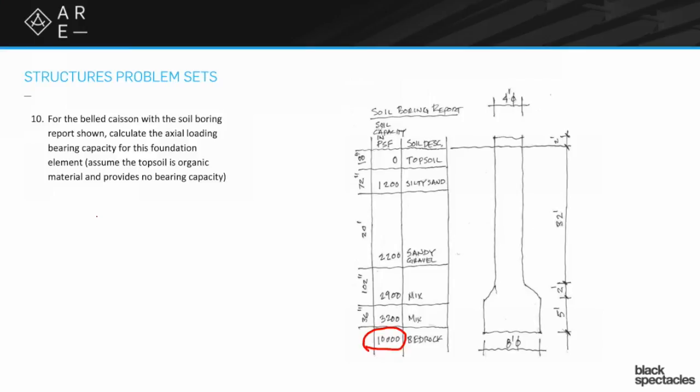So the question then is, I've got the 10,000 PSF and I've got an eight foot bell down at the bottom. What's my capacity? Your question might be a little confusing because it does have the word bearing capacity in there, but it's actually wanting to know how much axial you can put down the thing. If you remember from a previous problem, we know that pressure equals P over A, and we're actually going to solve for P.